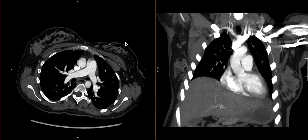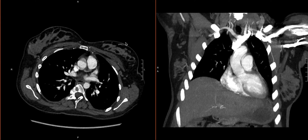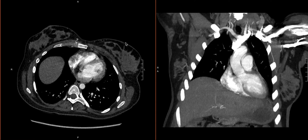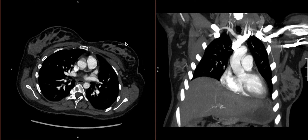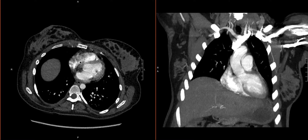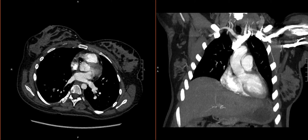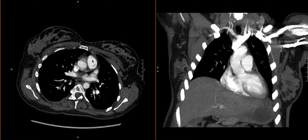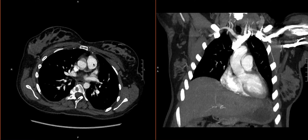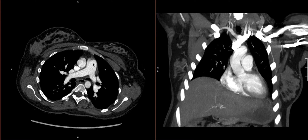Now we're ready to actually evaluate the pulmonary artery and trace it out so we can look for filling defects that are suspicious for pulmonary emboli. It's very useful, especially early on, to have a very systematic approach to how you do this. It's probably worth starting with the right ventricle and then going right out to the main pulmonary artery, the trunk, making sure that you start at the beginning and have a very systematic approach of actually tracing the vessel.